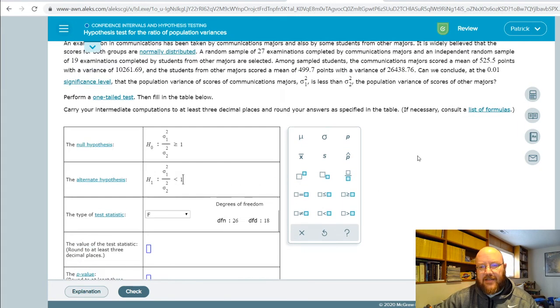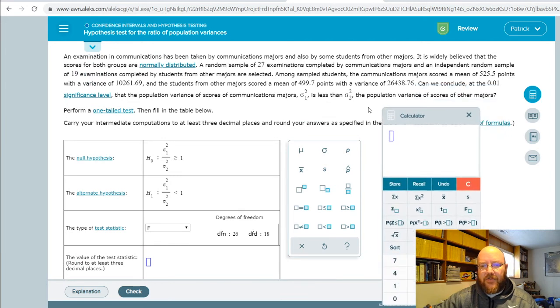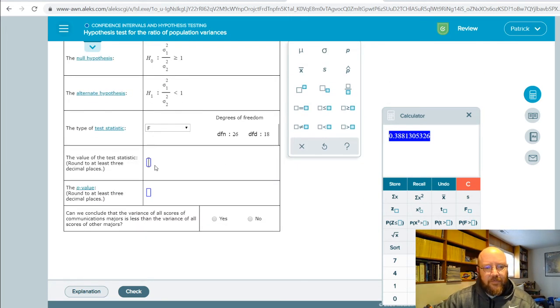Value of the test statistic. And so when you get one that's all text like this, what you have to do is you have to divide the population variances. So start with population one, and that's right here, 10261.69 divided by the variance for population two. You can completely ignore the means on these. 43876. There's our F statistic right there. The value of the test statistic is 0.388.